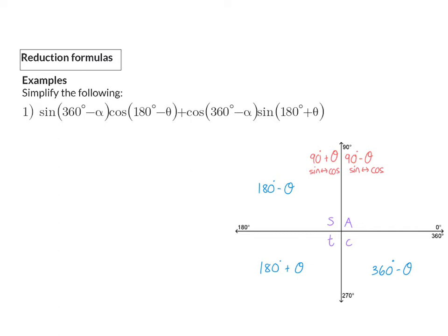Examples — simplify the following. In example 1, we have an expression with two terms, each containing two trig functions. None of these trig functions are acute angles yet, and that is always our first aim: change all the angles to acute angles in the first quadrant. We start with sin(360 − α), which is in the fourth quadrant where only cos is positive, so sin will be negative. To change this to sin of the acute angle α, we add a minus in front.